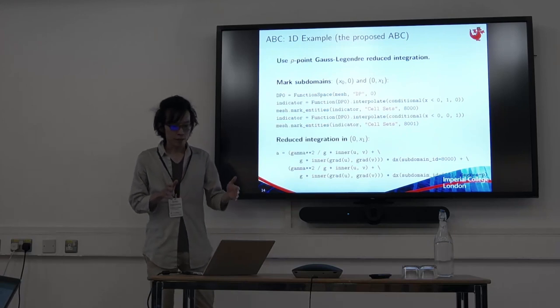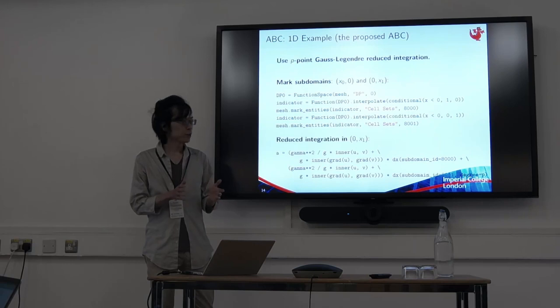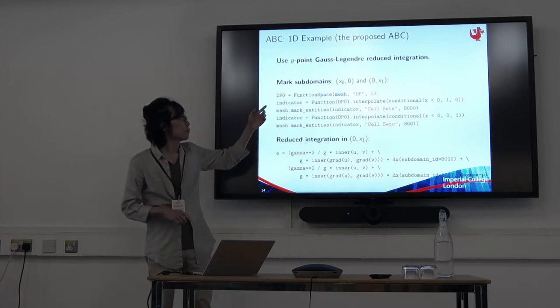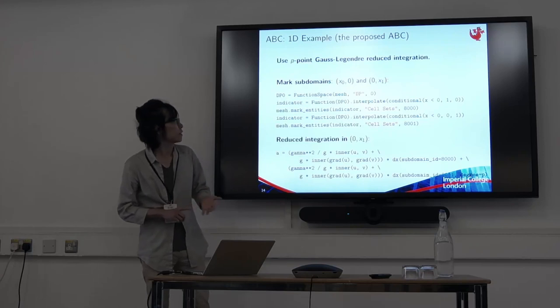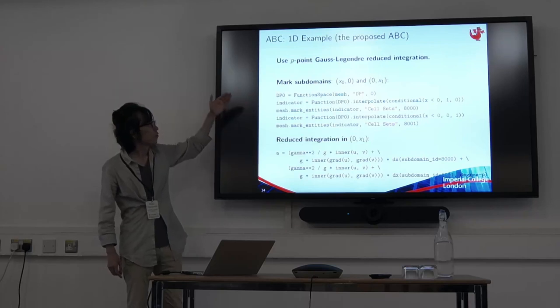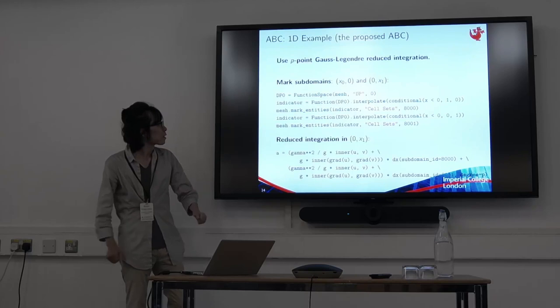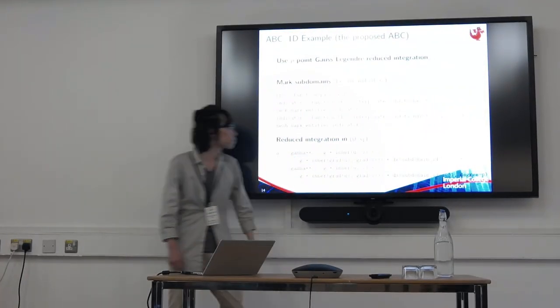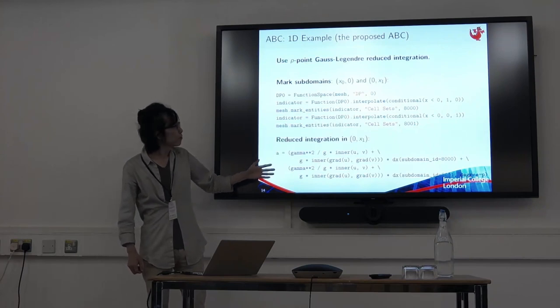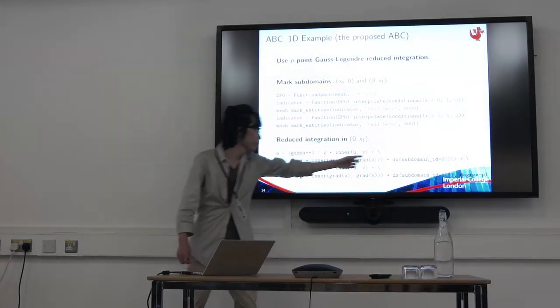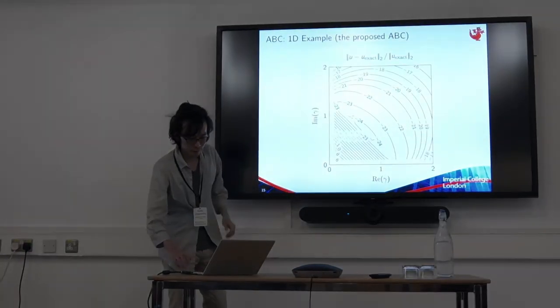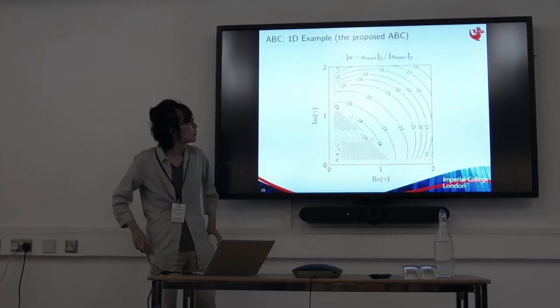In the artificial domain, we have layers, and on each layer, G is constant. And if we use p-th order element, we need p-plus-1 Gauss-Legendre for full integration. But the idea here is, we just use p-point rule instead of p-plus-1 point rule. And that's it. And we can do this in FireDrake in two steps. We first mark subdomains, physical domain and artificial domain, using mark entities method. So physical and artificial domains are labeled as 8000 and 8001. And then, when we make the bilinear form, we say this is the one for the physical domain. And this is the one for the artificial domain. And in the artificial domain, we use reduced integration. And this is the error we get. We can see this is a significant improvement.